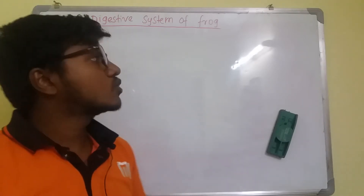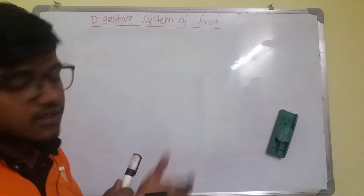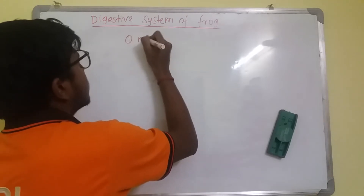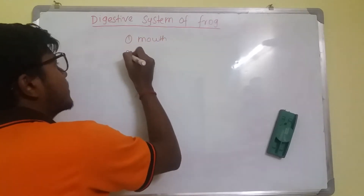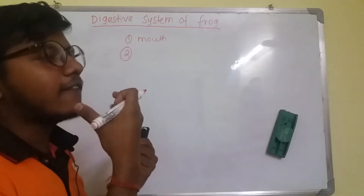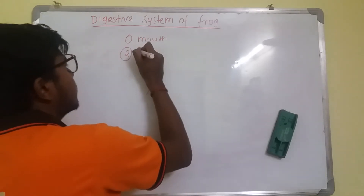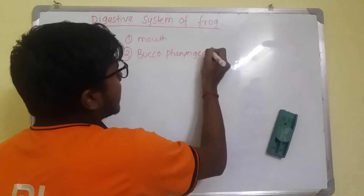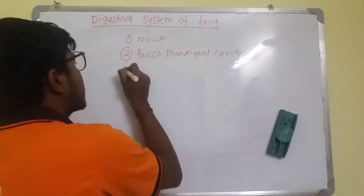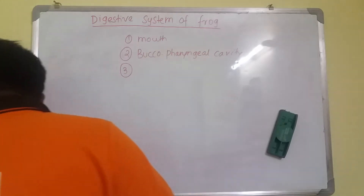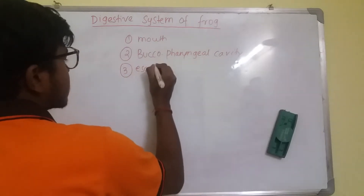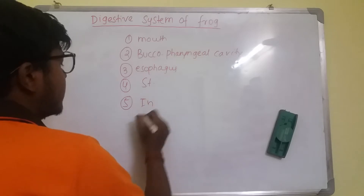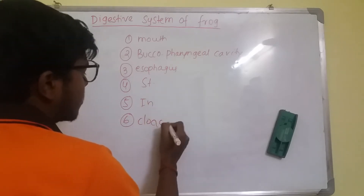The digestive system of frog is composed of various organs. These are: first, the mouth, also known as the oral aperture; second, the buccal cavity and pharynx are fused to form the buccopharyngeal cavity; third, the esophagus; fourth, the stomach; fifth, the intestine; and sixth, the cloaca.